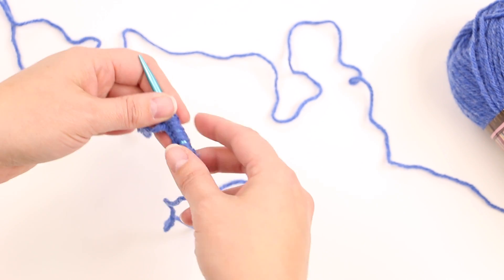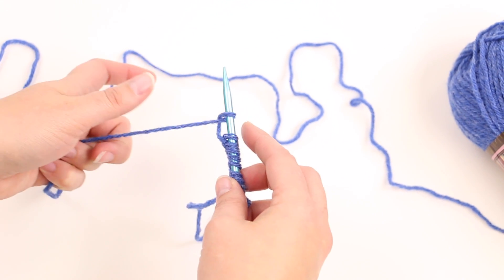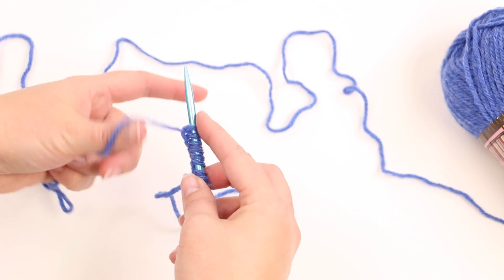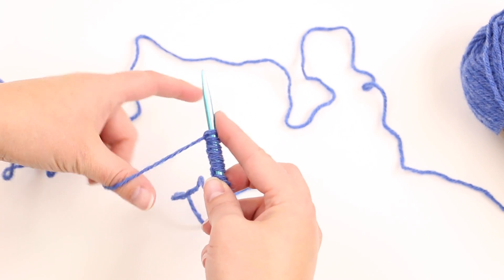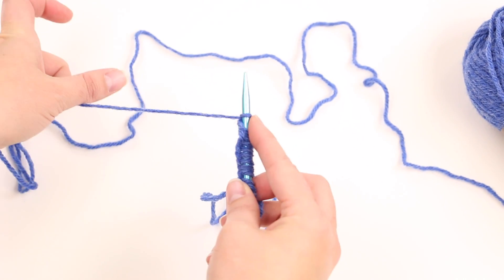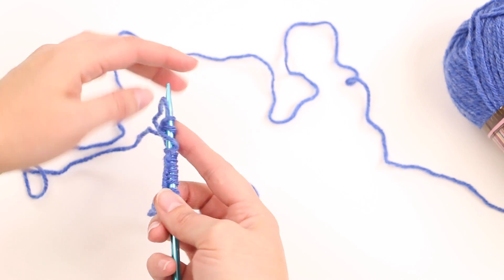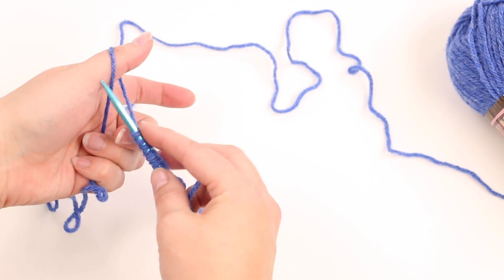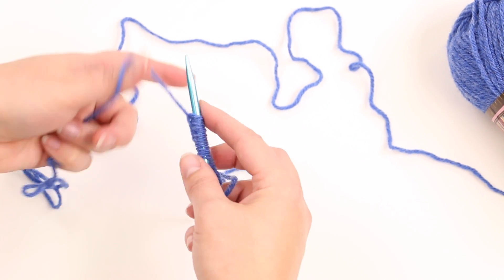And the only trick to this is make sure when you pull your thumb down here that you try and give the same tension to each loop. You don't want some that are hanging like this and some that are hanging like this. It's going to make a real uneven edge for you. So just make sure you keep a nice even tension.